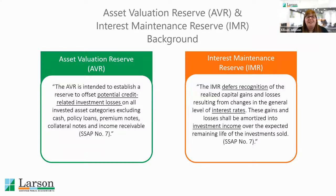The next area is in reserves, and these two items, the Asset Valuation Reserve and the Interest Maintenance Reserve, are both very specific to life insurance companies. No other insurance company has these two items, so I wanted to give a brief background as some context to help understand what they are first before we talk about the treatment.